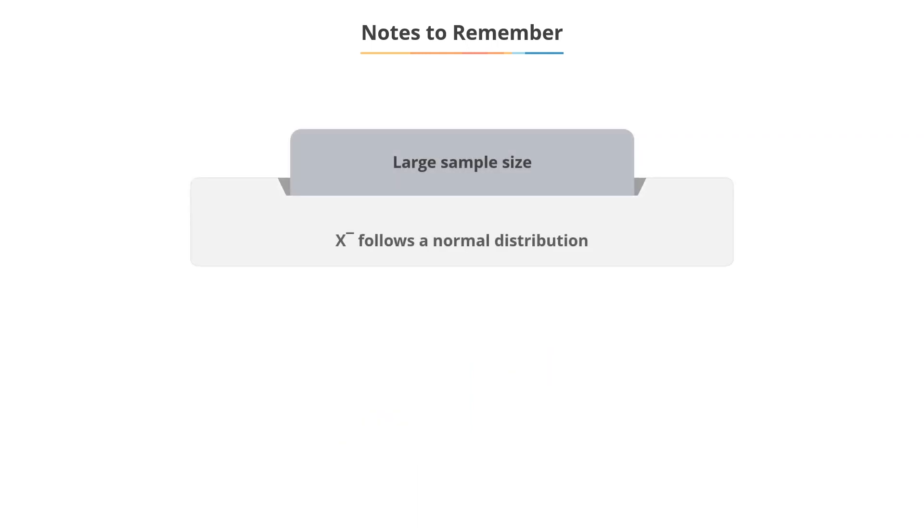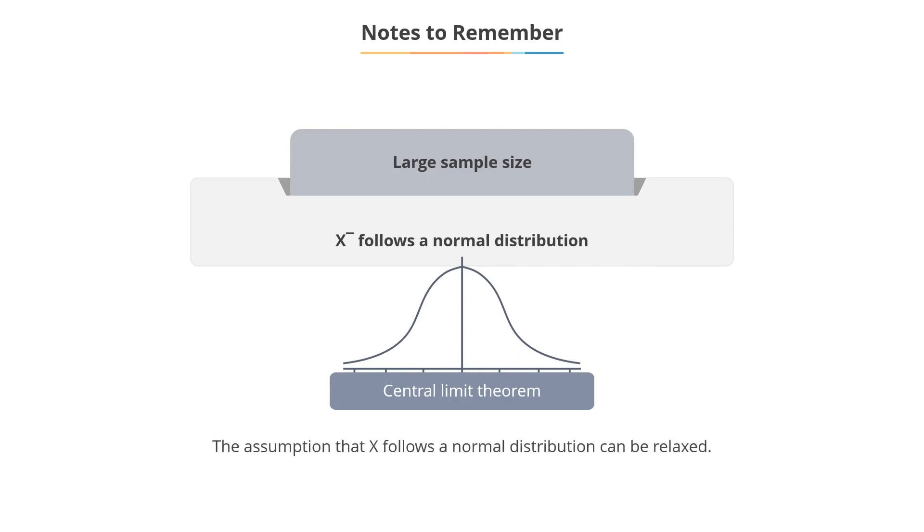Since the sample size is large, x-bar will follow a normal distribution even when x does not do so. This follows from the central limit theorem. Hence, for large sample sizes, the assumption that x follows a normal distribution can be relaxed.